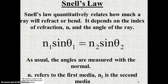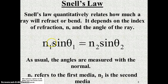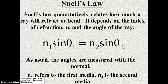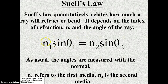Snell's law is a quantitative relationship that allows you to figure out how much a light ray bends. It depends upon the indices of refraction of the two materials. Theta 1 is the angle of incidence and theta 2 is the angle of refraction. N1 refers to the material in which the light ray is traveling, and N2 refers to the material it is entering. For most problems, we're just going to look at air versus another material. Since the index of refraction of air is 1, this formula becomes a little bit easier because 1 times anything is itself.